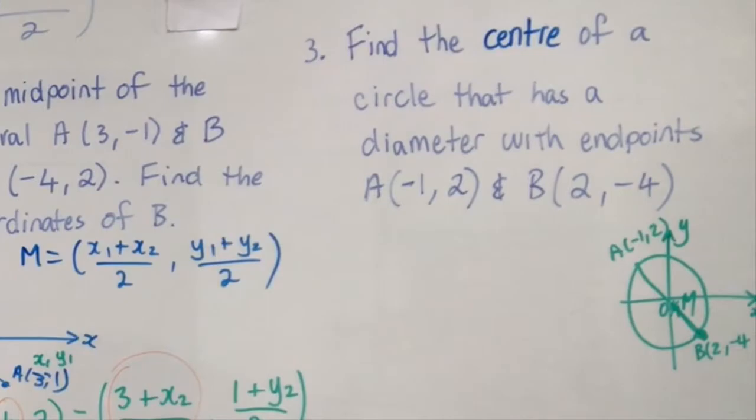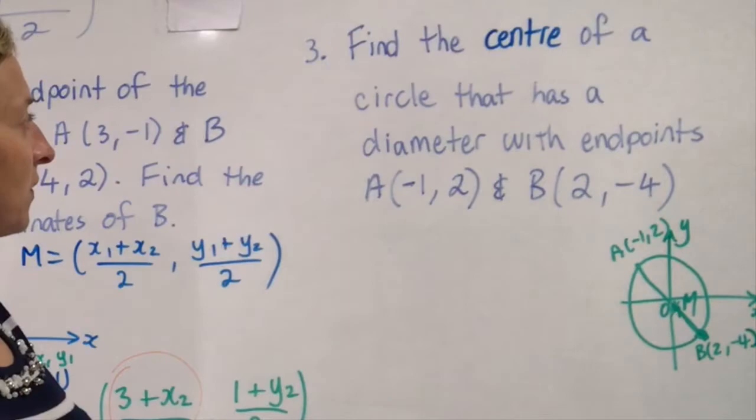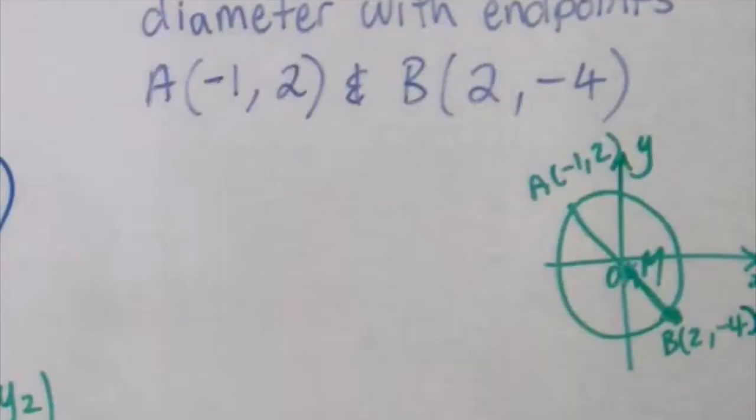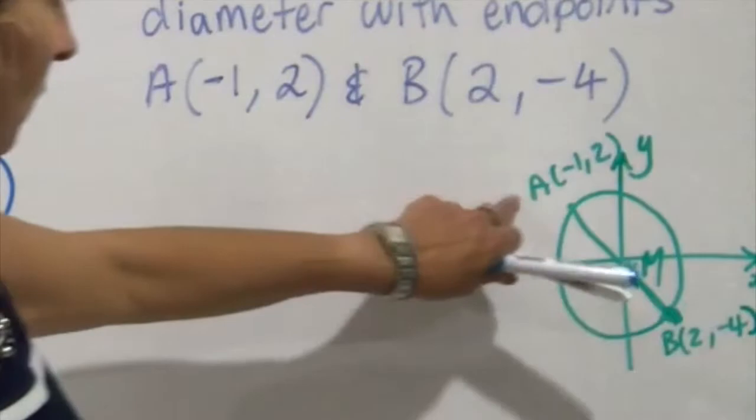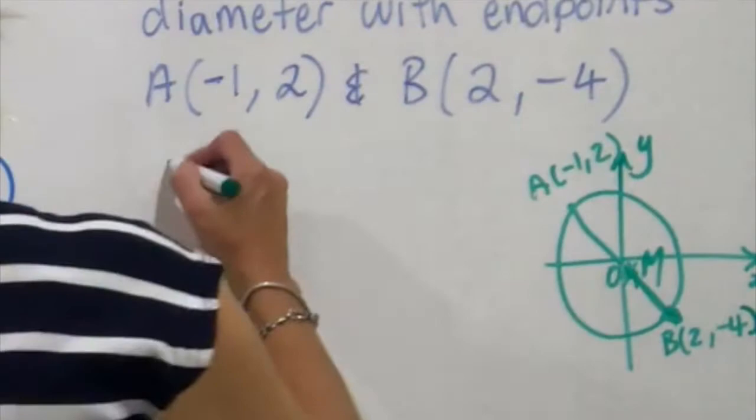Let's have a look at question number 3. I've drawn the picture. A and B are my endpoints of the diameter and I'm being asked to find the centre of the circle. Find the centre of a circle that has a diameter with endpoints A(-1, 2) and B(2, -4). So I have a diagram here and I'm being asked to find the centre of the circle. Won't the centre of the circle be the midpoint of A and B? Think about that. That's the diameter and the centre is always in the middle.